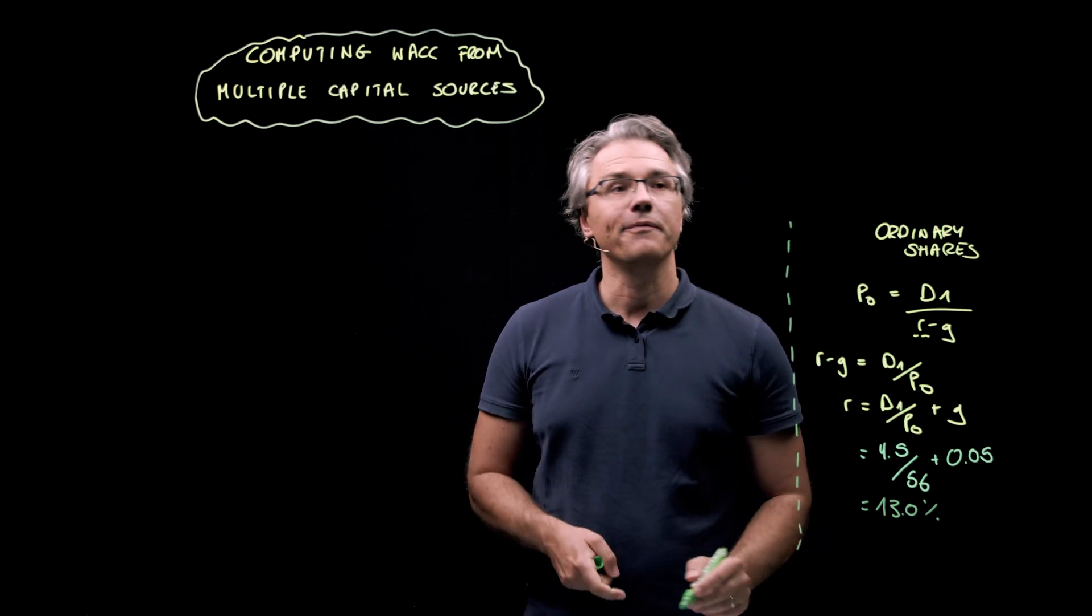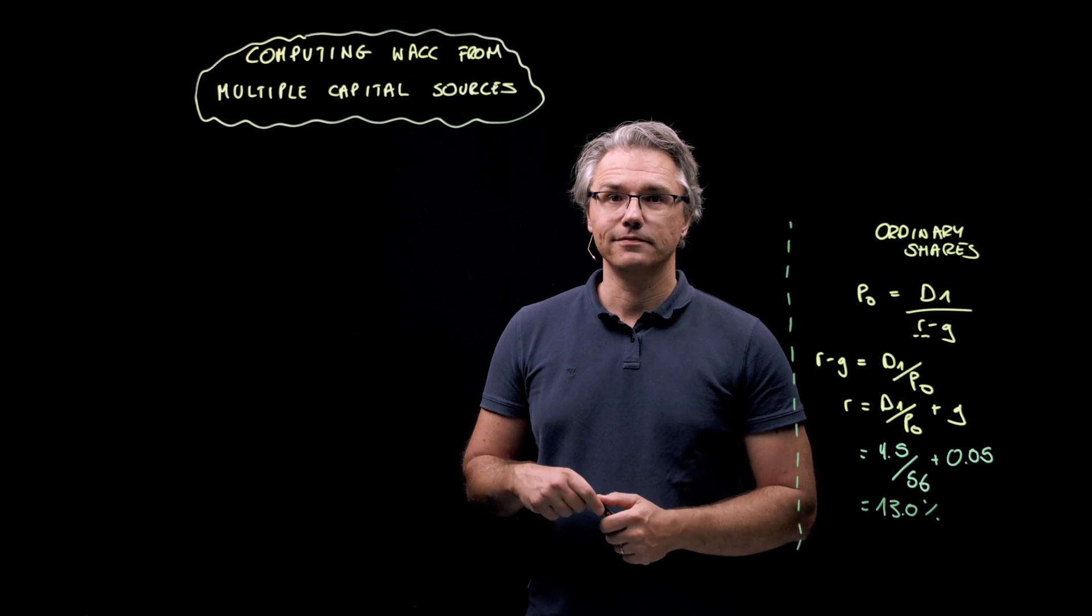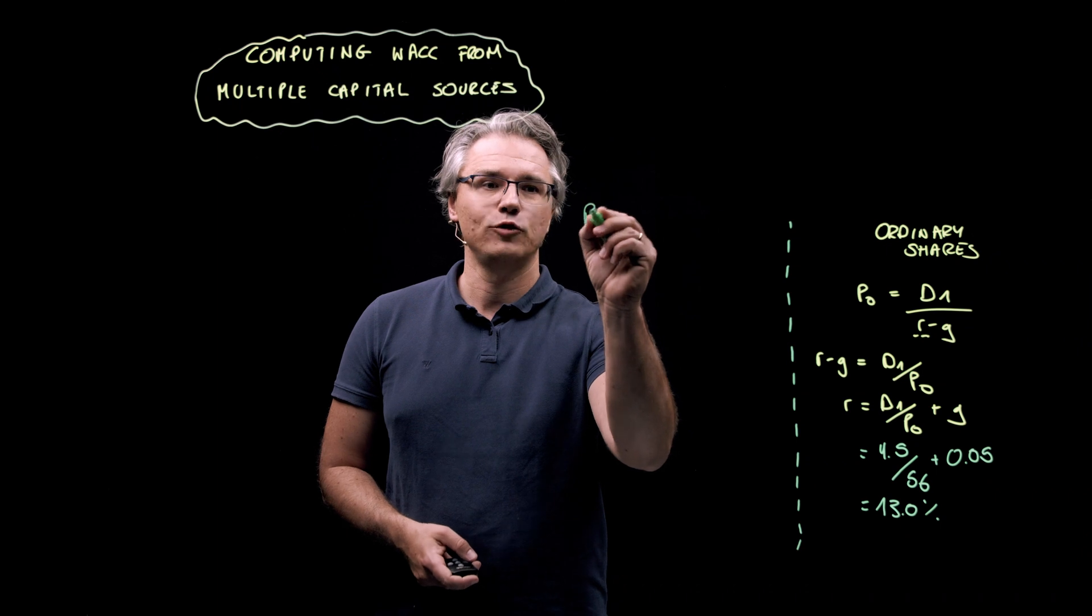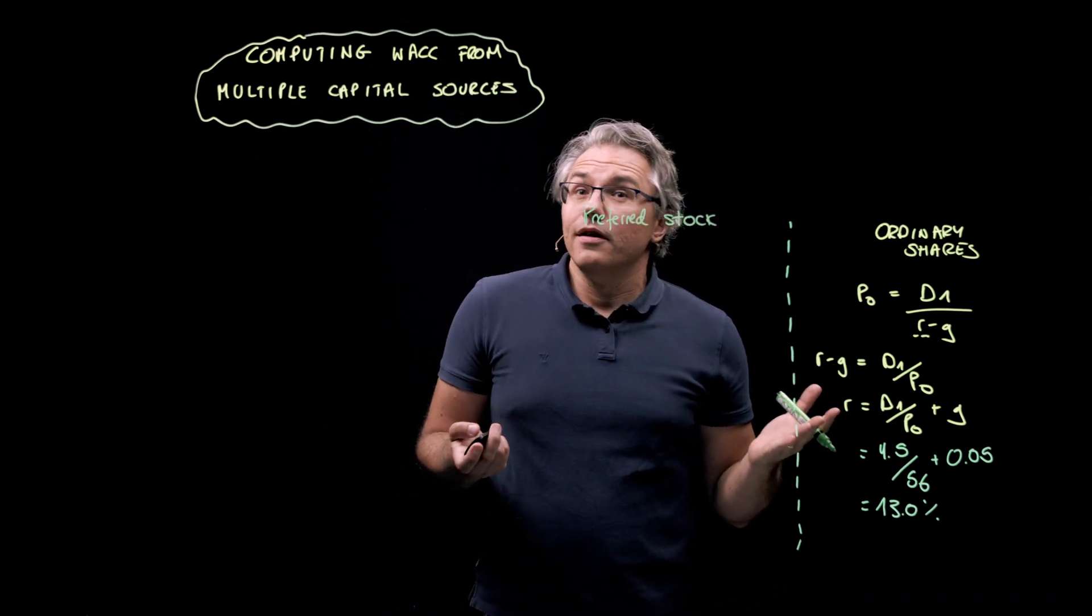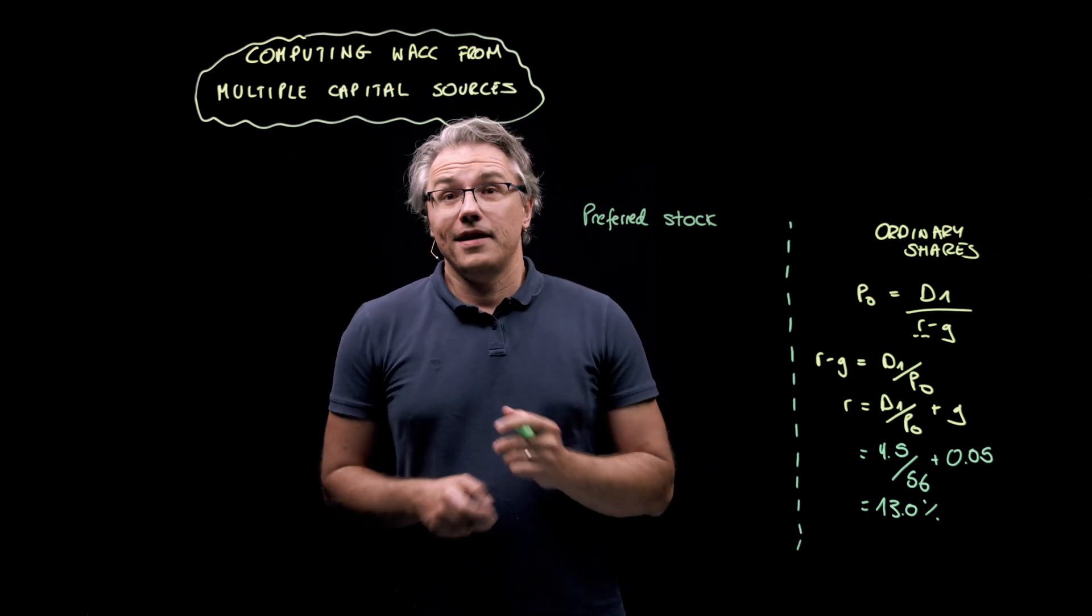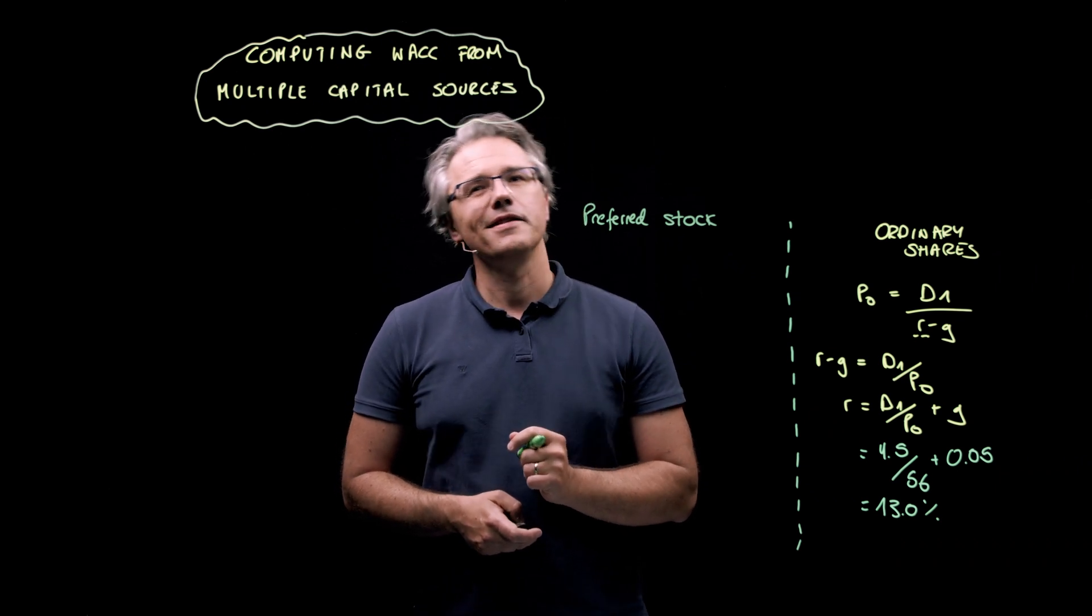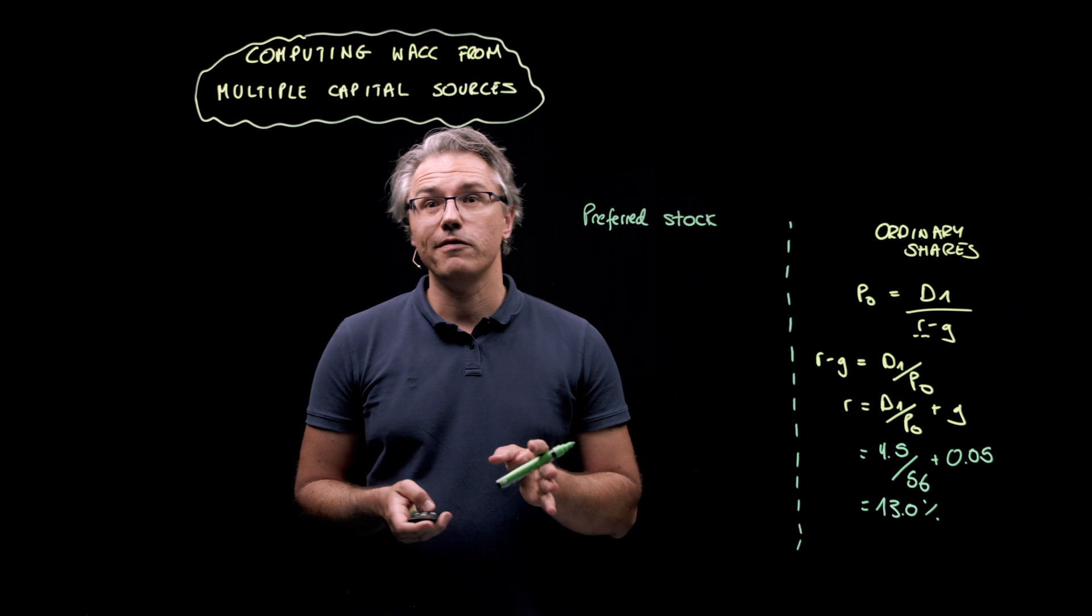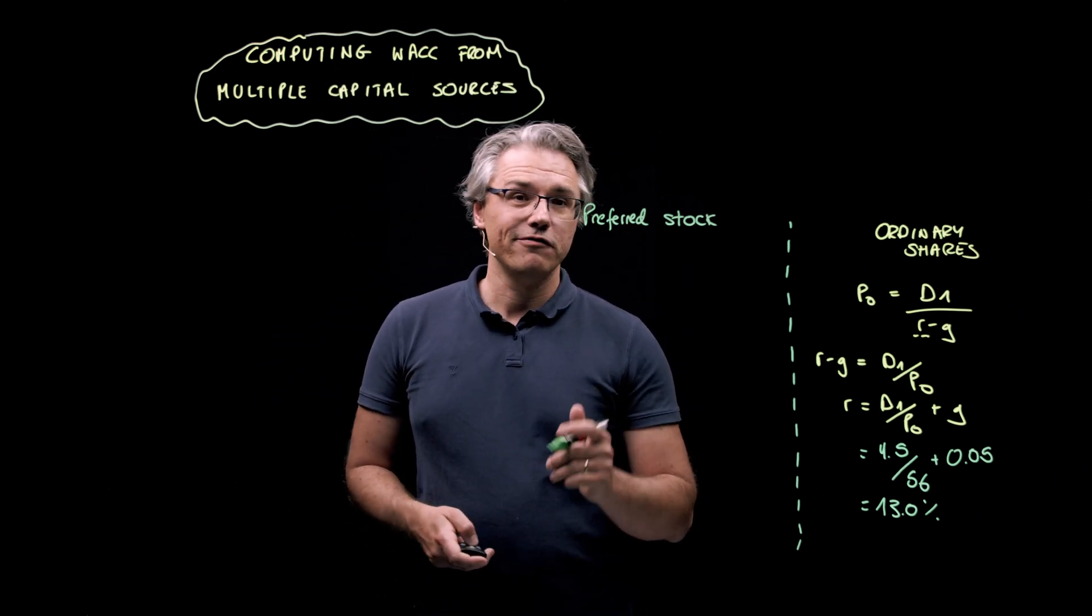Now, I'm going to draw a line here and let's move on to the next source of capital. And the next source is going to be preferred stock or preferred shares. The idea behind these shares is that they pay a constant dividend which does not grow over time, and we can easily treat this as being synonymous with a growth rate of zero. So, we end up with the following formula.